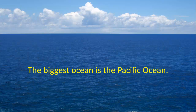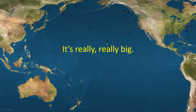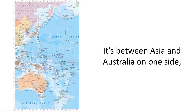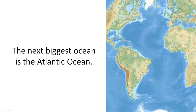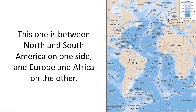The biggest ocean is the Pacific Ocean. It's really, really big. It's between Asia and Australia on one side, and North and South America on the other side. The next biggest ocean is the Atlantic Ocean. This one is between North and South America on one side, and Europe and Africa on the other.